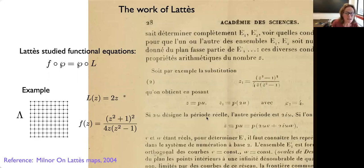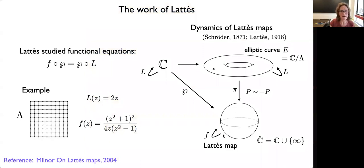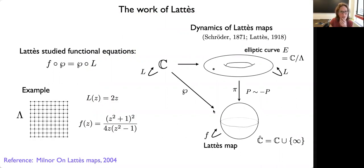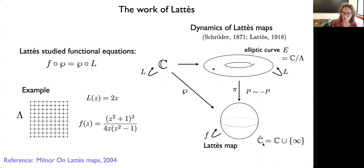One of the things Lattes observed was that as a dynamical system on the Riemann sphere, the periodic points are dense in the Riemann sphere. A rational function on the Riemann sphere is called a Lattes map — named after Samuel Lattes — if it's the quotient of an endomorphism of an elliptic curve in this fashion. This quotient, viewed from the elliptic curve to the Riemann sphere, is simply the gluing of a point with its additive inverse, identifying z and negative z in coordinates on the complex plane.